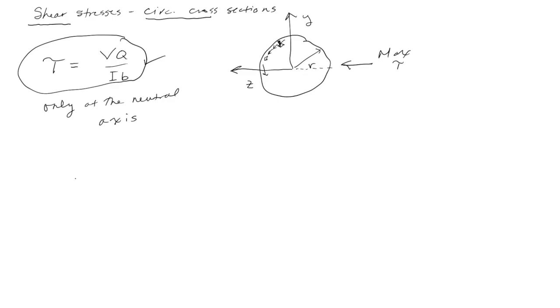Okay, so if we can make some simplifications now. If we know that the cross section is circular, then we know that the moment of inertia with respect to the z axis is just pi r to the fourth over 4. Q, which is going to be equal to, we're going to measure the q above the neutral axis which is just the area y bar is equal to pi r squared over 2. And then y bar is 4r over 3 pi. So you can look these things up in the back of the book. And so that equals 2r cubed over 3, okay?